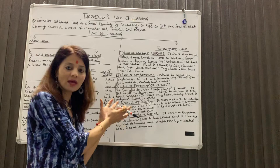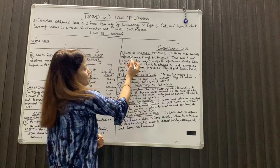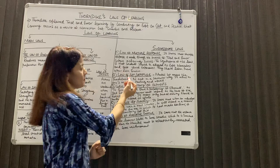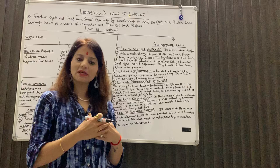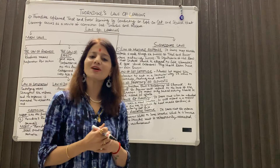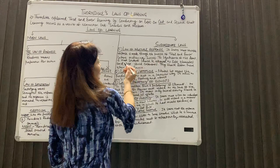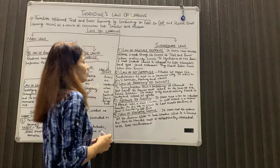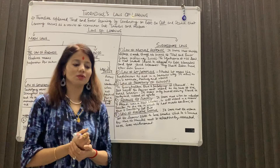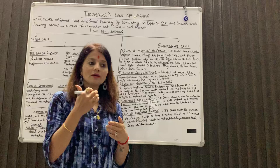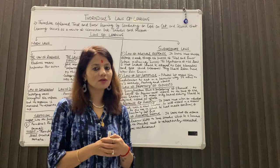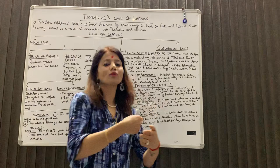Thorndike ने 5 secondary laws दिए. पहला है multiple response — responses made through the process of trial and error before achieving success. उन्होंने कहा था कि यदि किसी goal को हम पाने की कोशिश करते हैं, तो हम try करते हैं, और उन प्रयासों में हमसे बहुत गलतियाँ होती हैं, बहुत errors होती हैं. The significance of this law is that students should be allowed to experiment themselves and get varied experiences — they should learn from their own errors. इनका मानना था कि जो भी individual किसी चीज़ को सीख रहा है और गलतियाँ कर रहा है, तो उसे गलतियाँ करने देना चाहिए, क्योंकि व्यक्ति अपनी गलतियों से ही सीखता है.